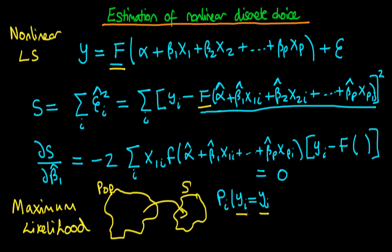So we have the probability that y_i, that particular observation, is equal to the value it actually equals in reality. This is the probability that our model says the dependent variable is actually equal to its true value. We can write this in general as some function of our independent variables. You can think about this p as representing the probability that our independent variables predict the true value for the dependent variable.